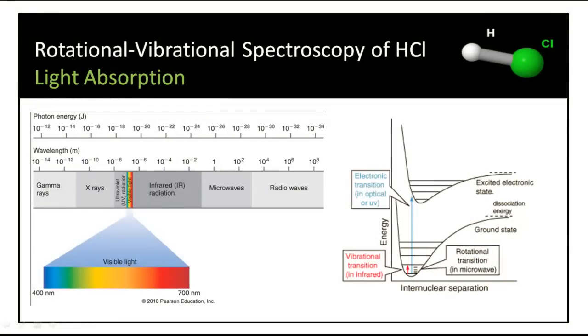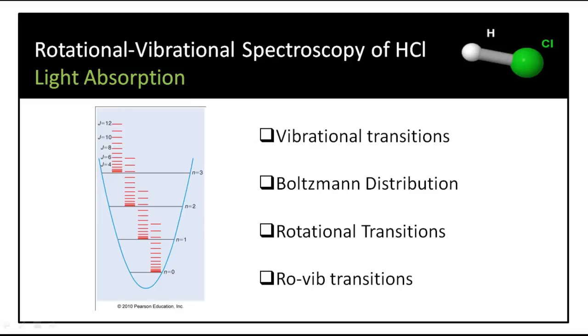We will quickly recap vibrational and rotational transitions. The picture shows the vibrational levels, v equals 0, v equals 1, v equals 2, and so on, within the ground electronic state. Also shown are rotational levels, whose energy differences are much smaller again. Each vibrational level has its own subset of rotational levels.